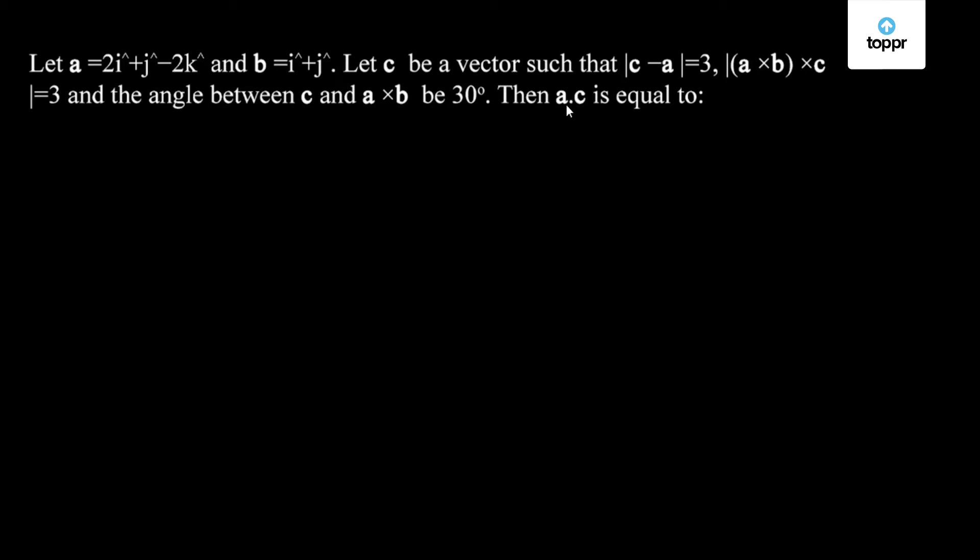We need to find the value of a dot c. Let's move further. Given values are a bar equal to 2i cap plus j cap minus 2k cap and b bar is i cap plus j cap.